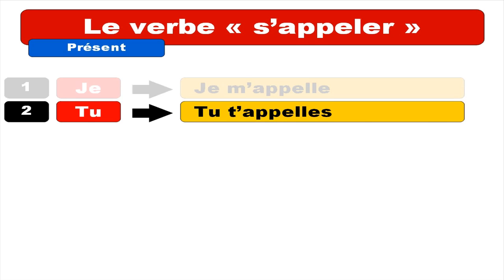Second form — same thing, but for tu, the form is tu te, and then something here. We're starting with a vowel, so it's the same thing as previously: 'e' disappears, so we get tu t'appelles. The final 's' is not pronounced. Tu t'appelles. Repeat.